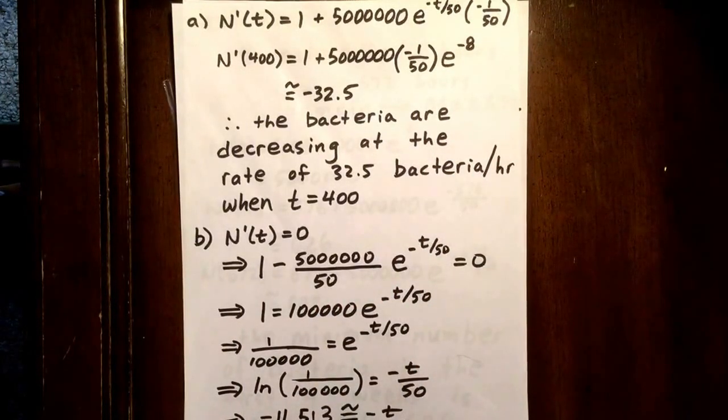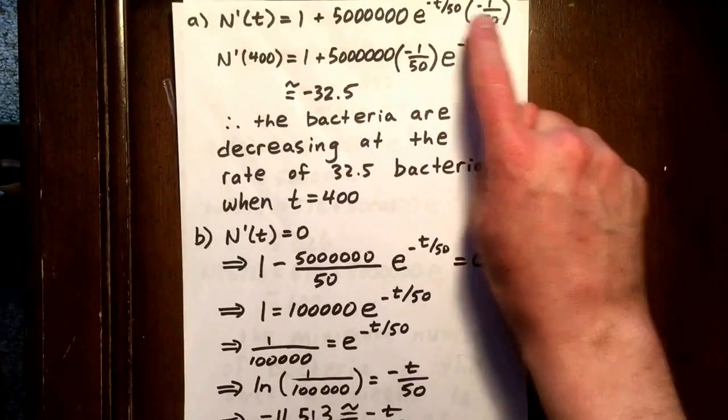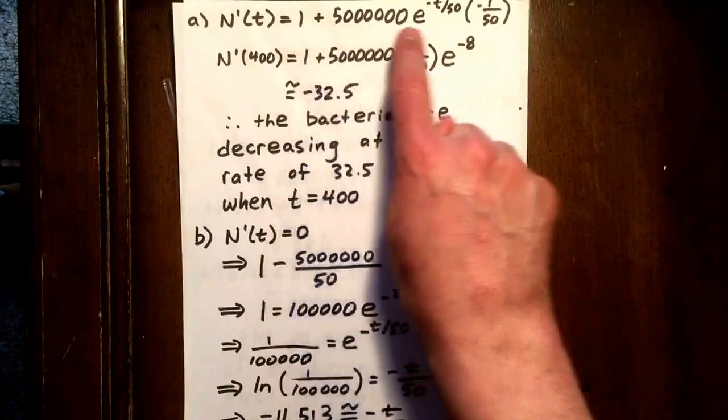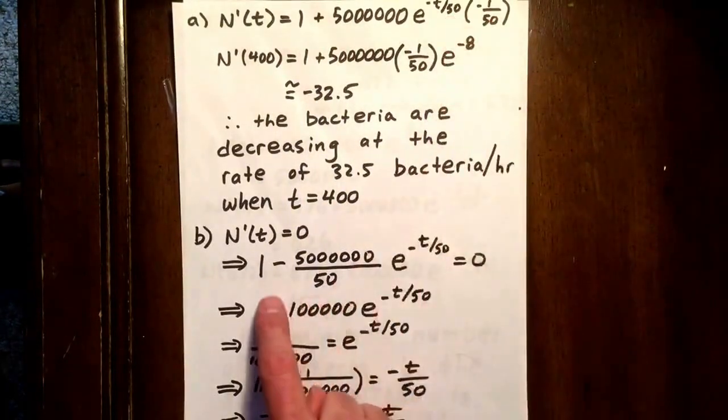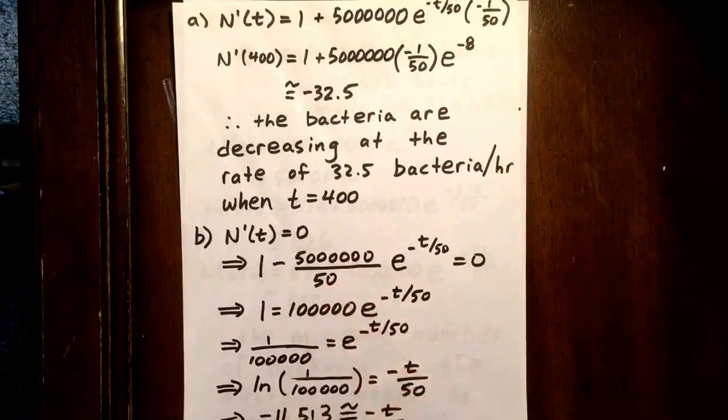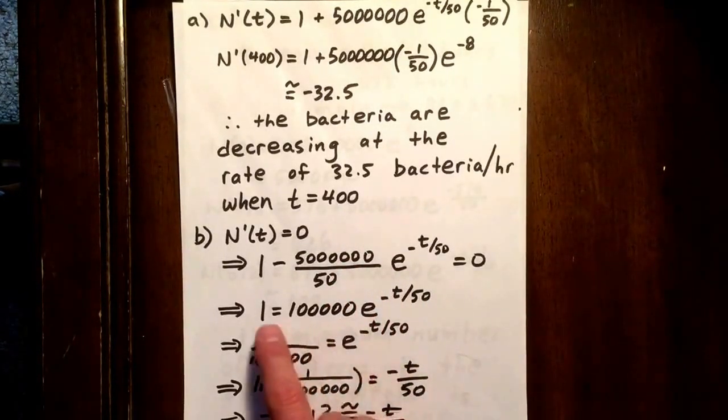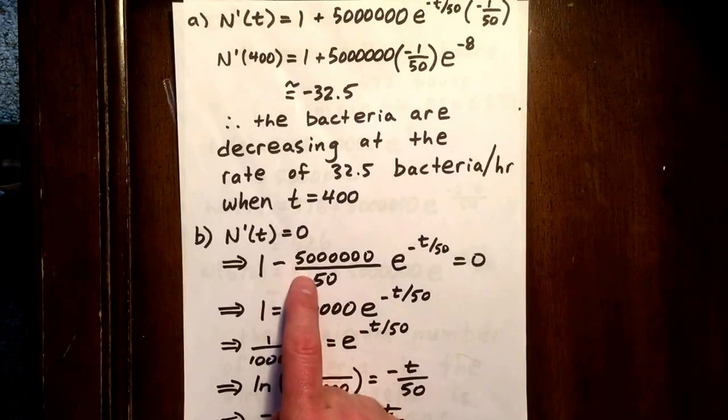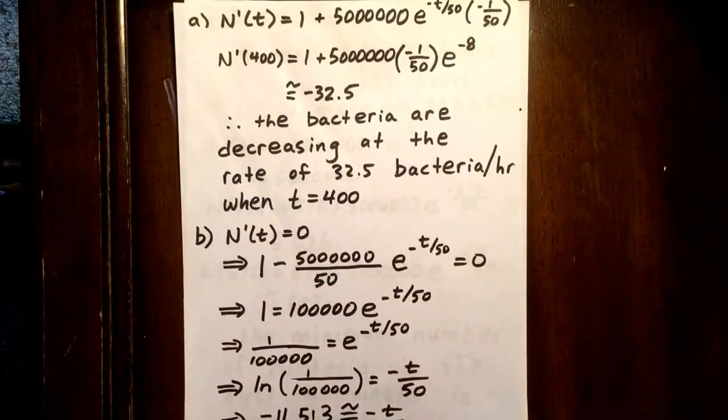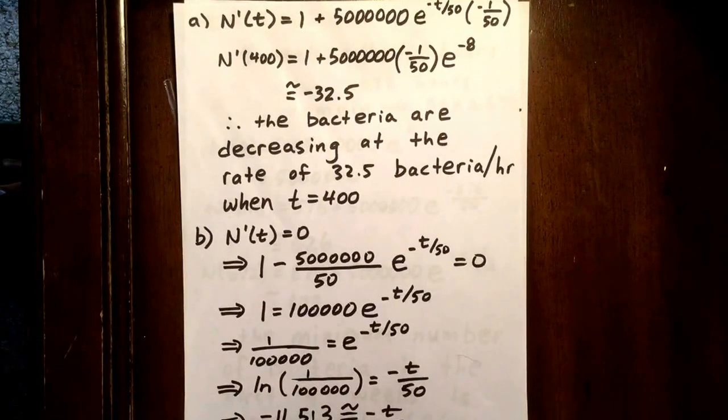So when we do that, we have 1 minus 5,000,000 over 50 e to the negative t over 50 is equal to 0. Well, 5,000,000 over 50 is 100,000. So if we add 100,000 e to the negative t over 50 to both sides, we get 1 is equal to 100,000 e to the negative t over 50.